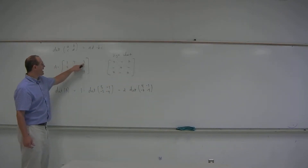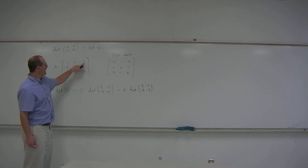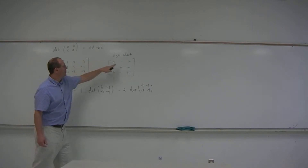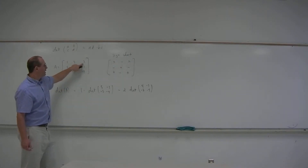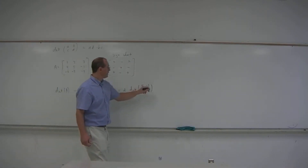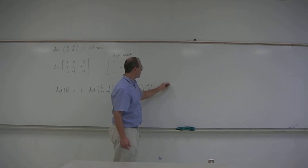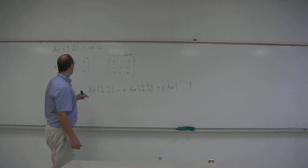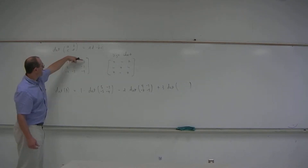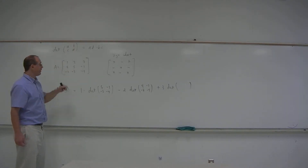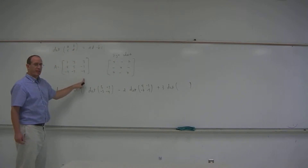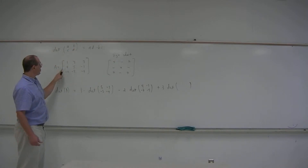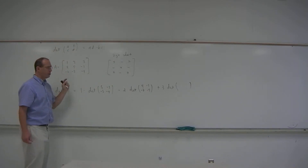The last term in the expansion will be plus 3 times the determinant of the 2 by 2 matrix from striking out the first row and the third column. So this 2 by 2 matrix is 4, 5, negative 2, negative 3.